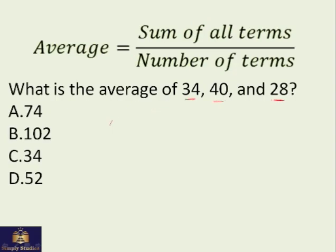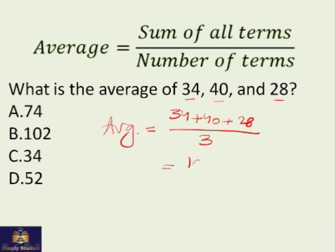Average equals sum of all terms divided by the number of terms. There are three terms: 34 plus 40 is 74, and 28 gives you 102 divided by 3, which gives you 34. So this is the answer, this is the average of these three numbers.